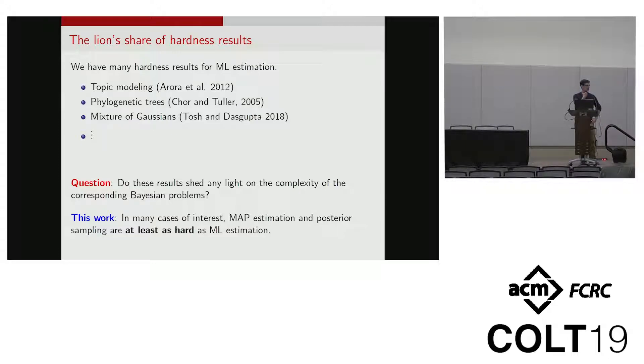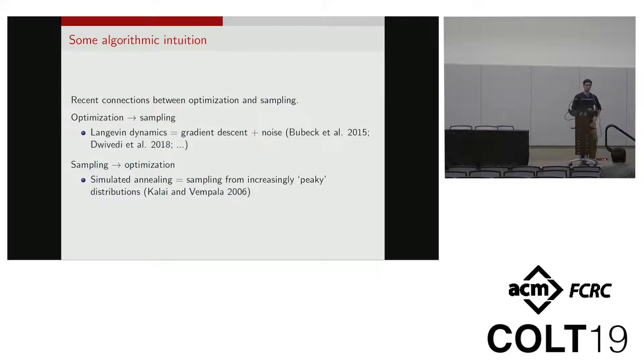So why would we expect a result like this to be true? In particular, we're dealing with maximum likelihood estimation—that's an optimization problem—and we're talking about hardness of sampling. There are a couple of sources of intuition here. One has been talked about at length in this session, which is these algorithmic connections between optimization and sampling.